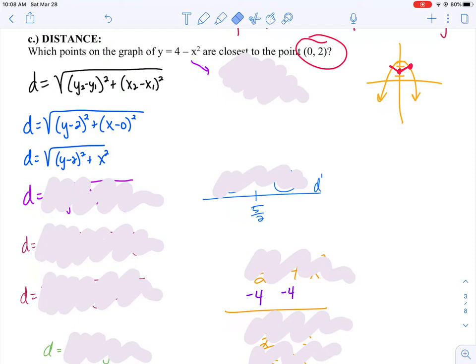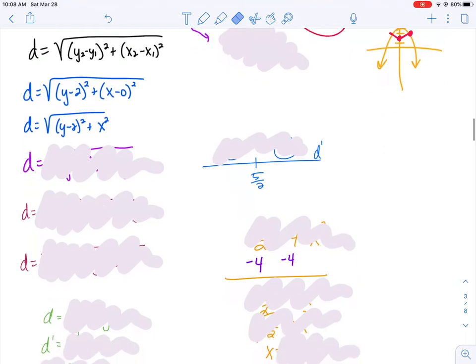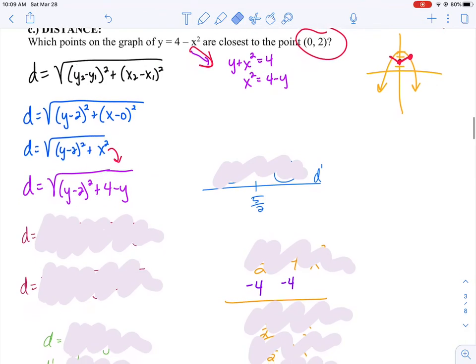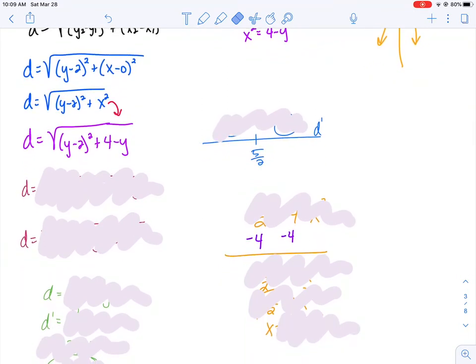I still have lots of different variables. I have a d, I have a y, I have an x. I still want to try to get down to the least amount of variables possible. Do we know anything else about this problem where we could possibly get rid of the y or get rid of the x? Well, if you look back at the original problem, doesn't it tell us that y equals 4 minus x squared? If I solve that equation for x squared, could I say that x squared is the same thing as 4 minus y? That means in my equation that I'm trying to optimize, I can get rid of this x squared and really call it 4 minus y.